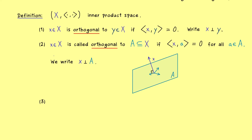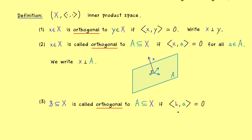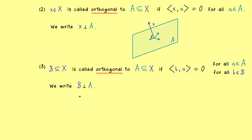It is also possible to say that two given subsets are orthogonal to each other. We say that a subset B is orthogonal to a subset A if, for every vector b in B and every vector a in A, the inner product of b with a vanishes. It could happen that we have to check infinitely many inner products, and we use the same perpendicular symbol even when we talk about subsets and subspaces.